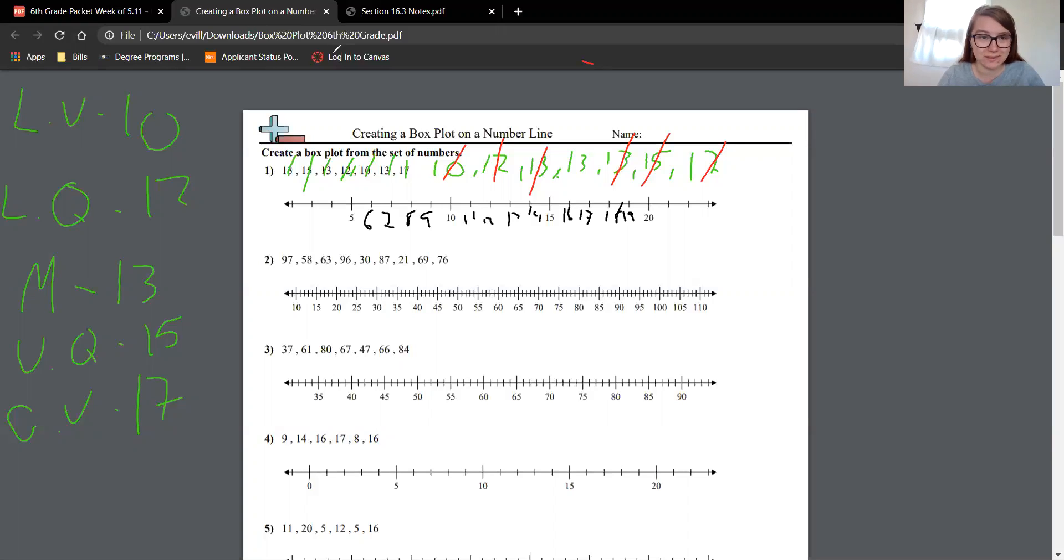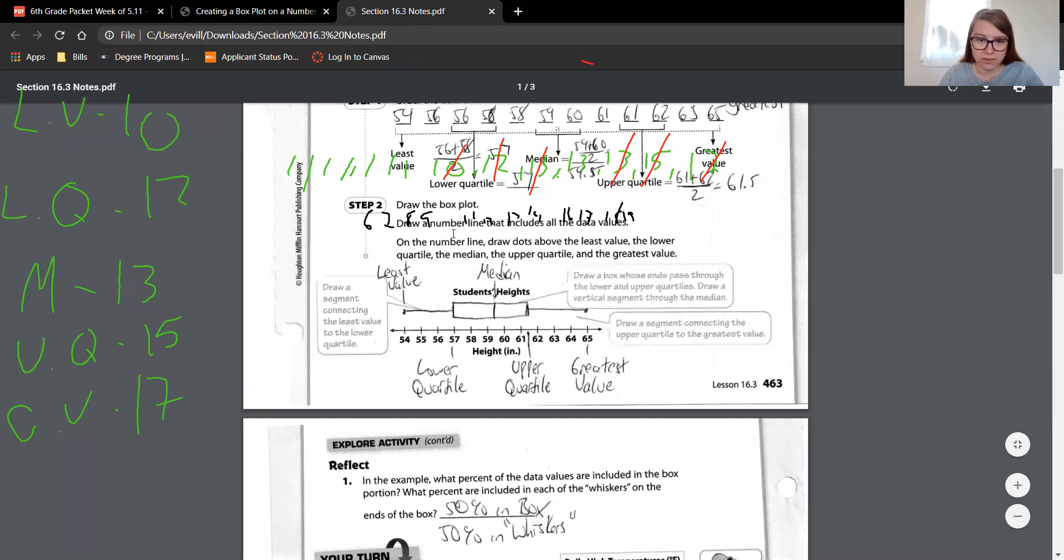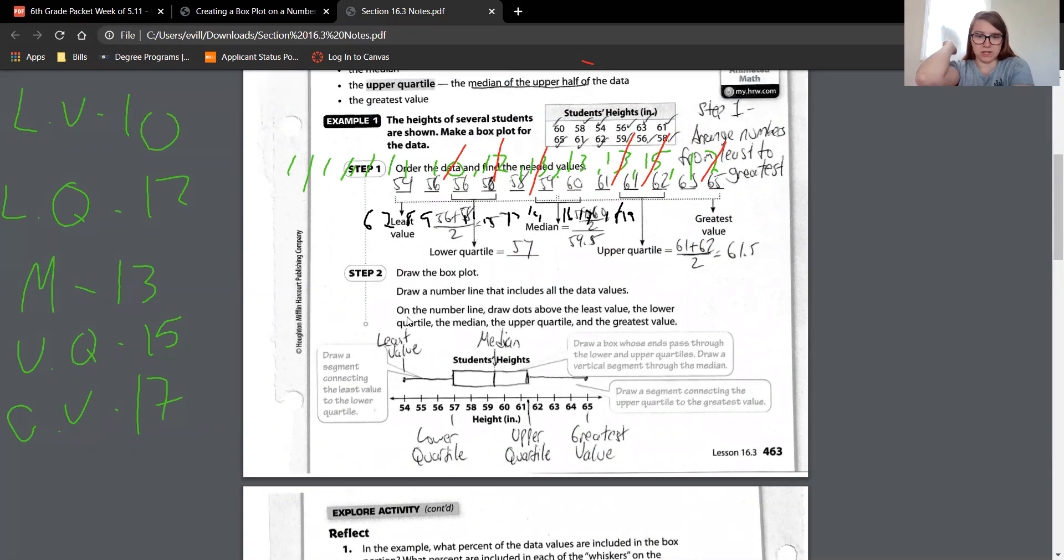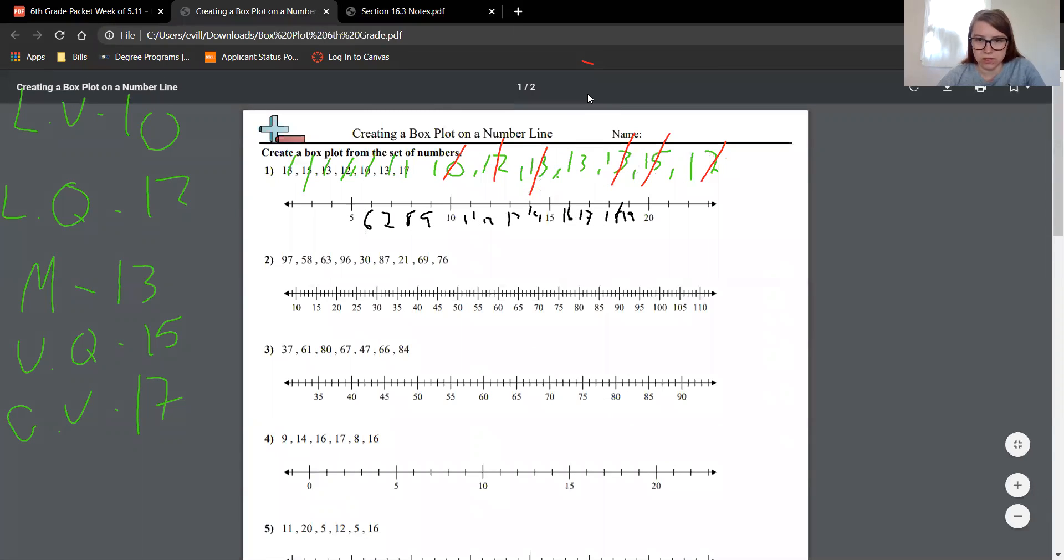So where were we? Making that box. So we have our number line with all the data values. Now we need to draw dots above the least value, the lower quartile, the median, the upper quartile, and the greatest value. All right, so we gotta make our dots. I'm going to use purple because it's my favorite color.